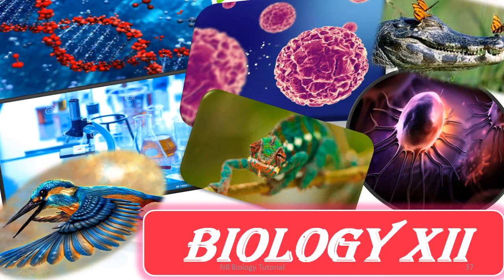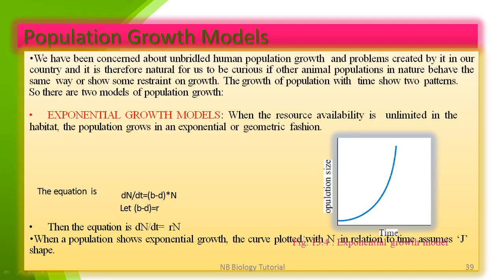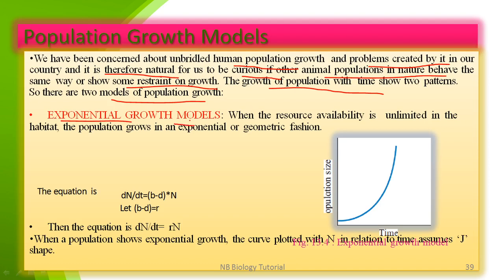Hello dear students, welcome back to my channel. We are going to continue the next part of the 13th topic — that's population growth models. We have been concerned about the unbridled human population growth and the problems created by it, so it is natural for us to be curious if other animal populations in nature behave the same way or show some resistance to growth. The growth of population with time shows two patterns, so there are two models of population growth: the first is the exponential growth model and the second is the logistic growth model.